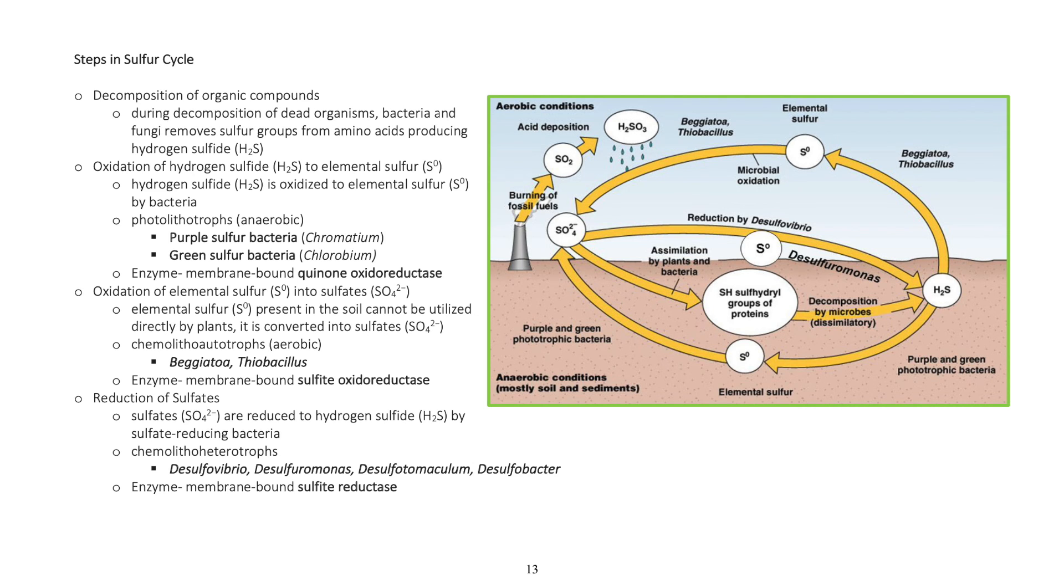Enzyme: membrane bound quinone oxidoreductase. Oxidation of elemental sulfur into sulfates: Elemental sulfur present in the soil cannot be utilized directly by plants, it is converted into sulfates (SO4).